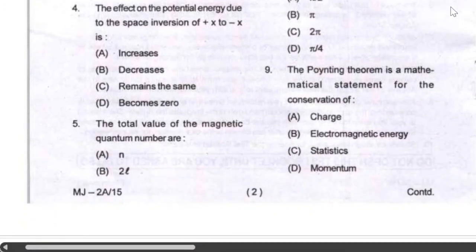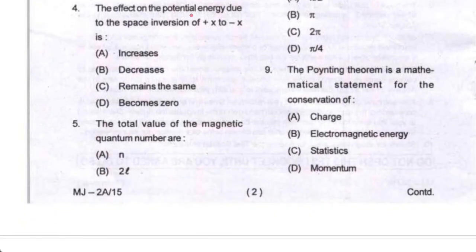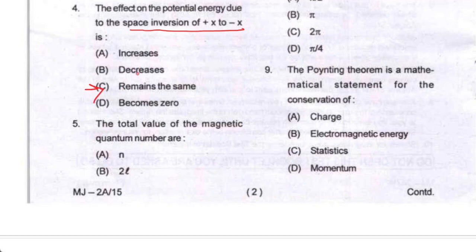Question number four: the effect on the potential energy due to the space inversion of +x to −x. There will be no effect — the potential energy will remain the same. So option C is your correct option.